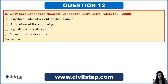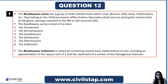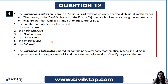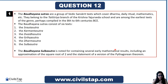The Baudhayana Sutra is a Vedic Sanskrit text covering dharma, daily ritual, and mathematics. It belongs to the third branch of the Krishna Yajurveda school, and the earliest texts were perhaps compiled in the 8th to 6th century BC. The Baudhayana Sutras are six texts: Srauta Sutra, Karma Sutra, Dvaidha Sutra, Griha Sutra, Dharma Sutra, and Sulva Sutra. The Baudhayana Sulva Sutra is noted for containing early mathematical results including an approximation of the square root of 2 and a version of the Pythagorean theorem.